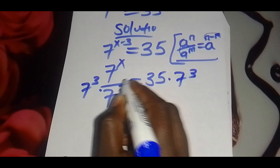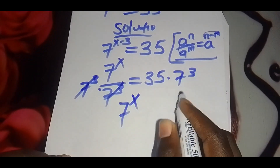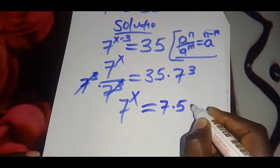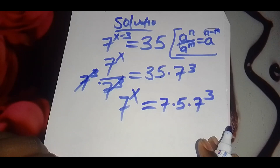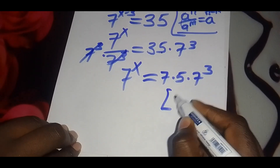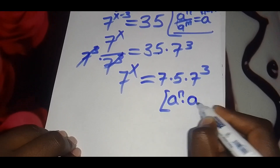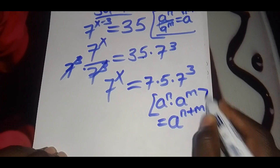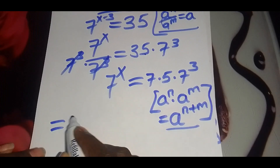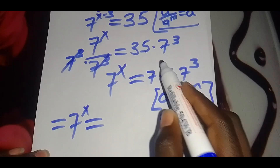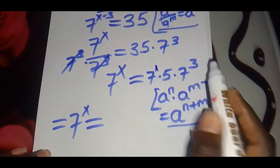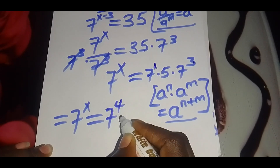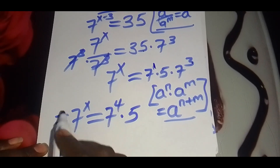So we multiply both sides by 7 raised to 3, so that we have 7 raised to x is equal to 35 multiplied by 7 raised to 3. Now, 35 can be expressed as 7 multiplied by 5, and using the identity a raised to n multiplied by a raised to m equals a raised to n plus m, we get 7 raised to x equals 7 raised to 1 times 5, which gives us 7 raised to 4, multiplied by 5.